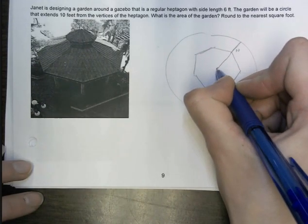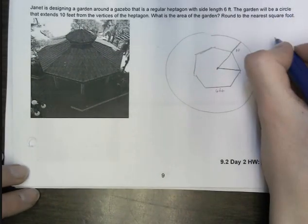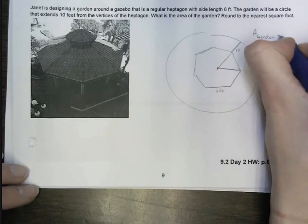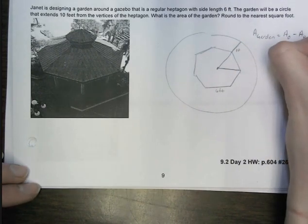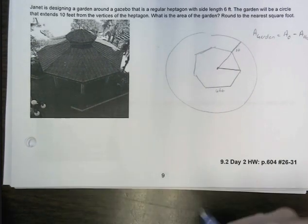So, again, if I draw in a triangle here, basically, I need to do the area of the garden. In order to find that, I have to do the area of the circle minus the area of the heptagon.